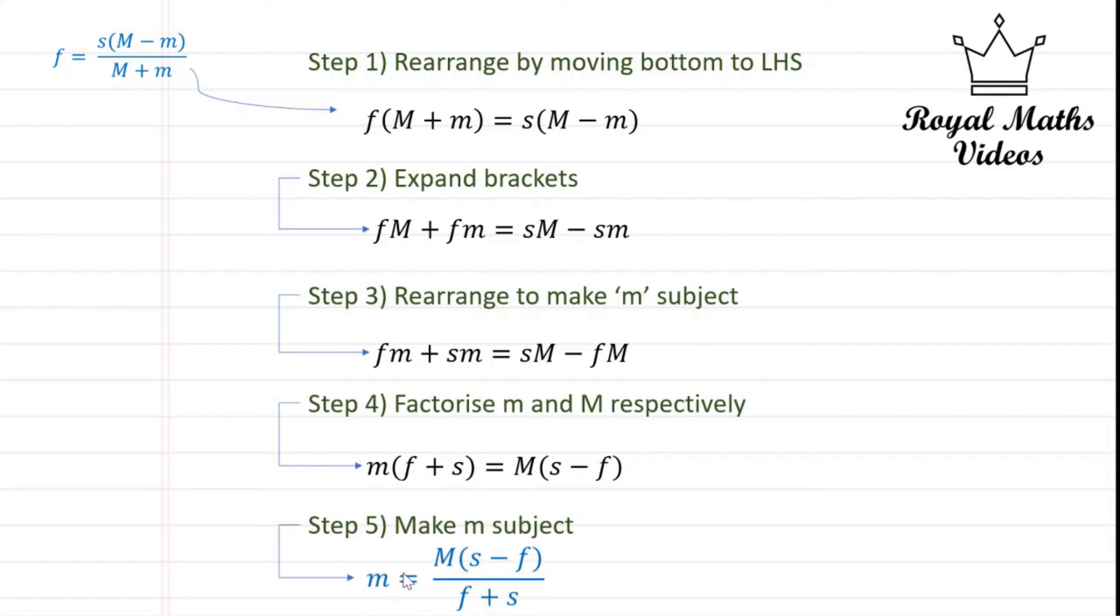And this gives our answer where we have lowercase m is equal to uppercase M times brackets s minus f over f plus s.